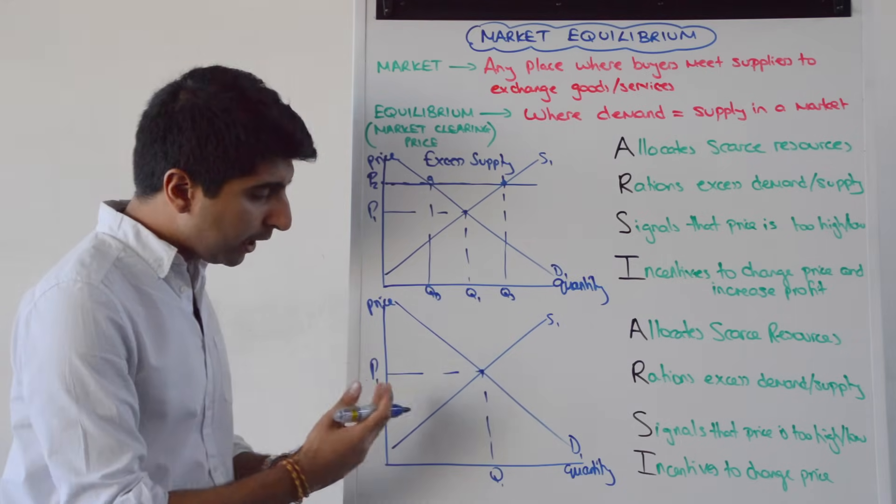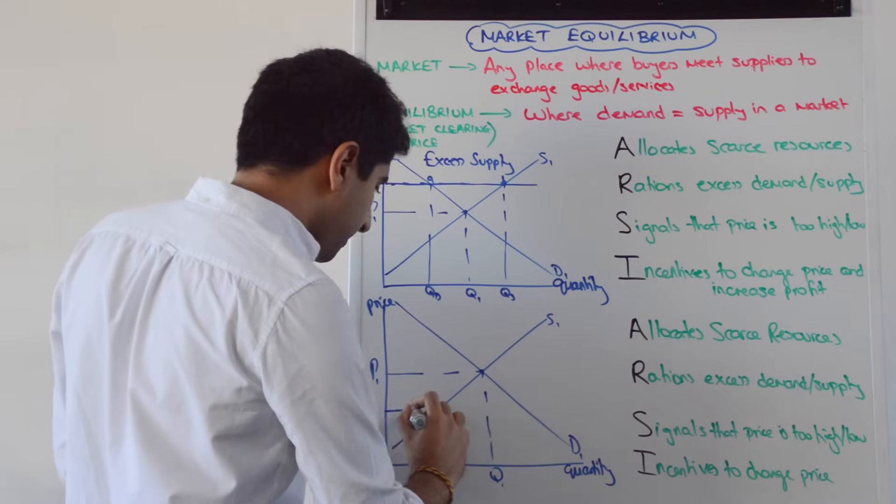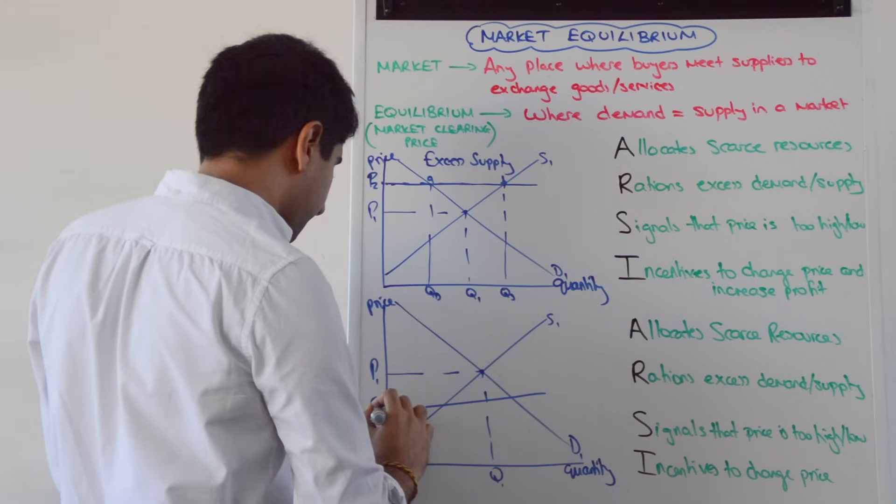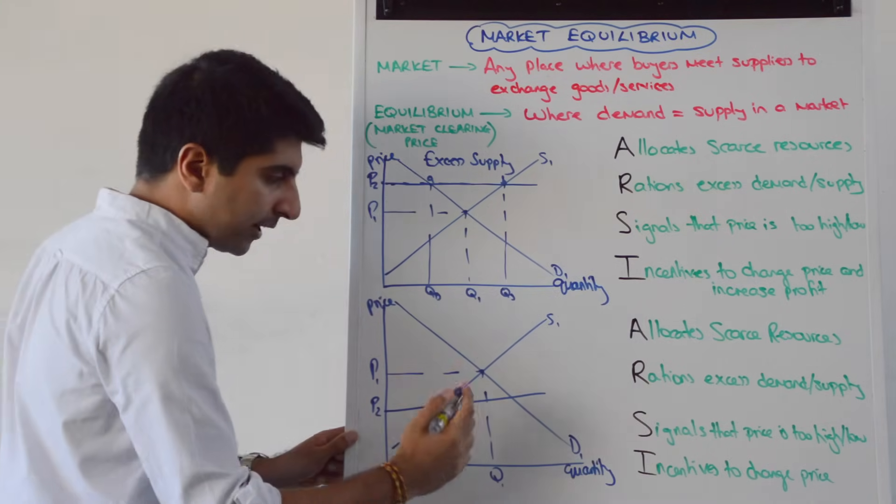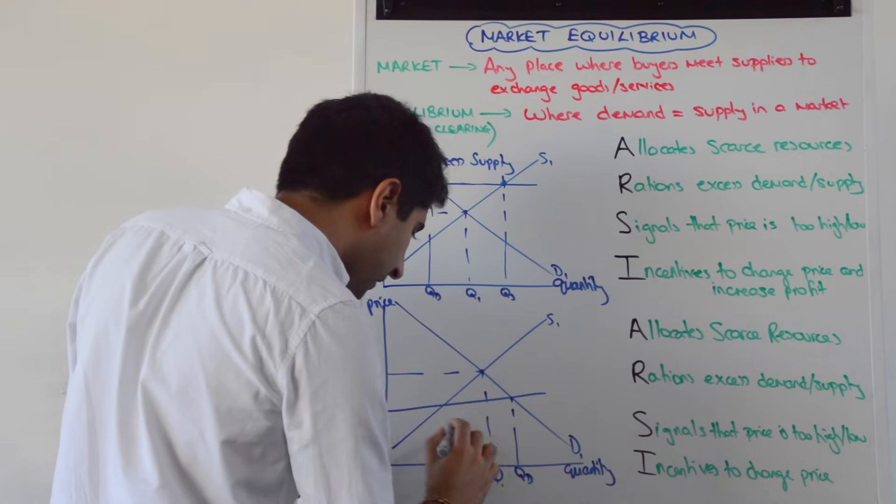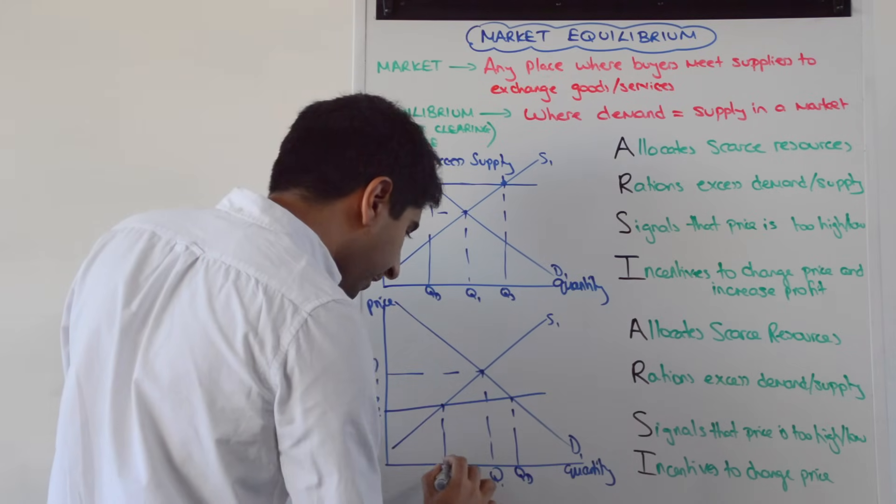What about if the price is below P1? So if the price is below P1, let's say here, let's call that P2. You can see if we take this line across, that quantity demanded is over there, quantity supplied is only over there.